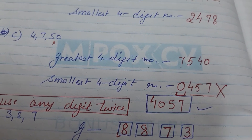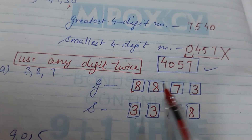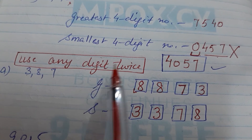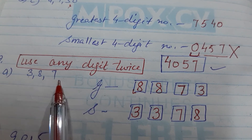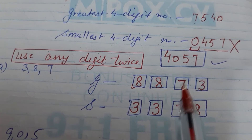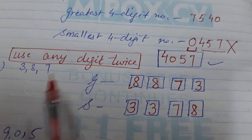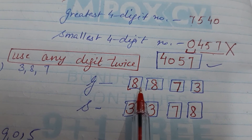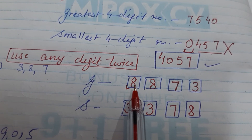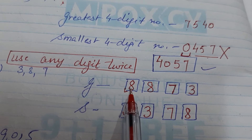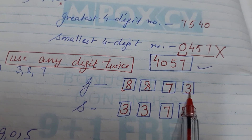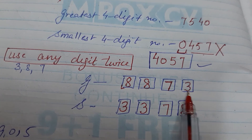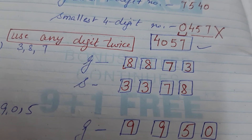Next question: we have to make the greatest and smallest four-digit number where any one digit can be used twice, and three digits are given — 3, 8, and 7. For the greatest number, we start with 8 as it is the greatest. We can use a digit twice, so I will use 8 two times. Then write the remaining digits in descending order: 8, 8, 7, 3. It becomes 8873.